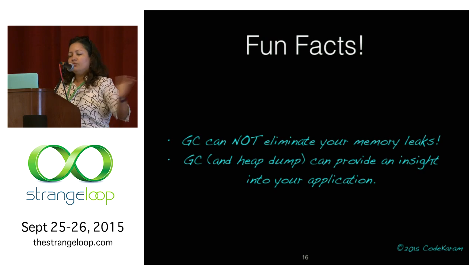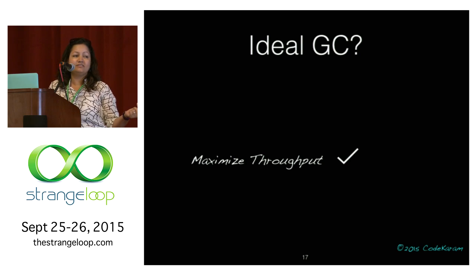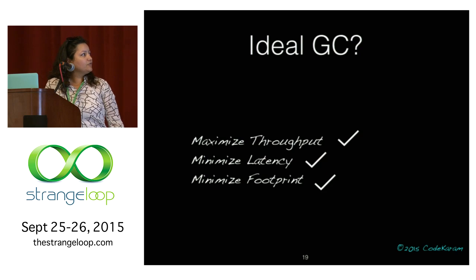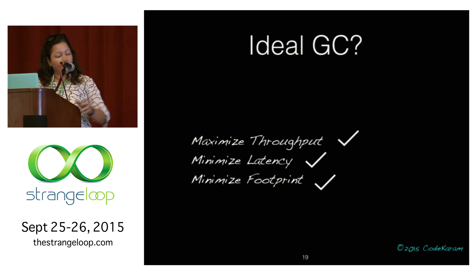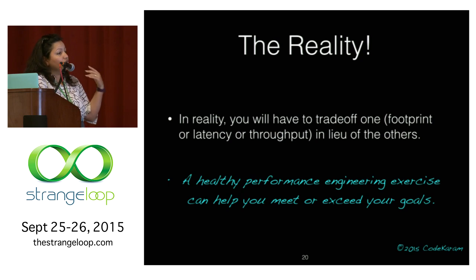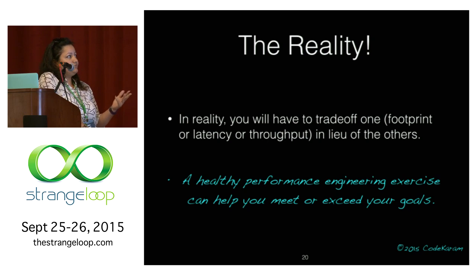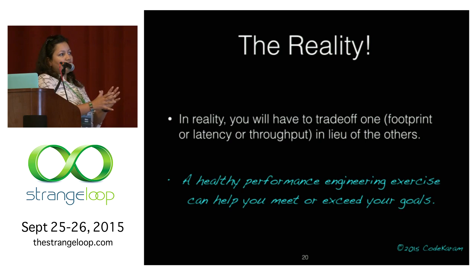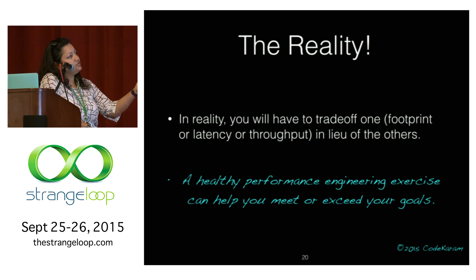What would be an ideal GC? Maximize throughput — yes. Minimize latency — yes. And of course, minimize footprint. But is that the reality? No. Any software optimization process would tell you that you have to trade off. You can at most pick two out of the three, but not all three. A healthy performance engineering exercise can help you meet your goals when trading off, setting realistic expectations and realistic goals.